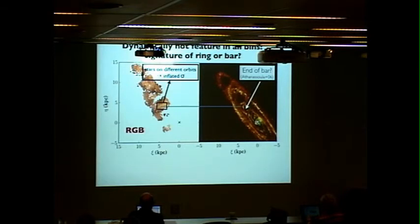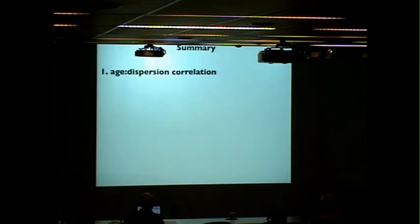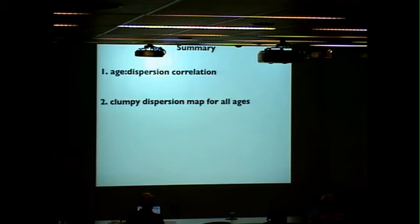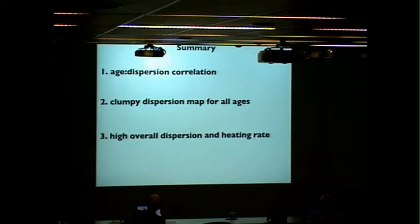Because we see this in all four of our age bins, I think it's interesting to think that this might be what's happening. But there are, of course, a lot of other options, including maybe a very recent satellite impact that's had an effect on all of the stars, no matter how young they are. So that's all I have to say. In summary, we've seen a clean monotonic age dispersion correlation in stars in the stellar disk, a clumpy dispersion map for all ages, and high overall dispersion and heating rate compared to what we see in the Milky Way. Thank you.